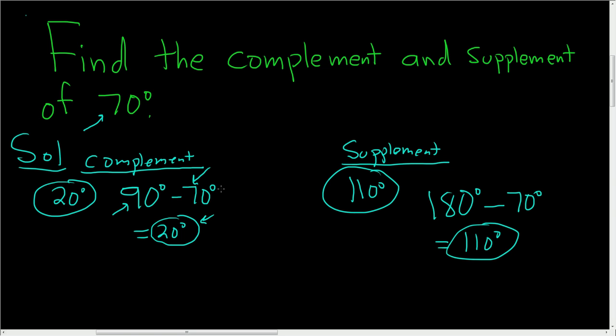To recap, to find the complement, just take 90 degrees and subtract your angle. To find the supplement, just take 180 degrees and subtract your angle.